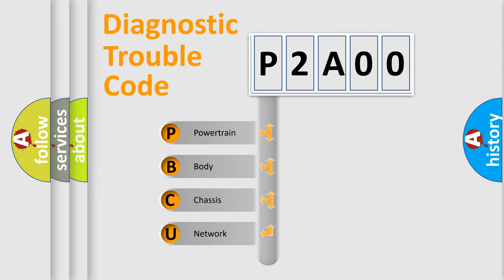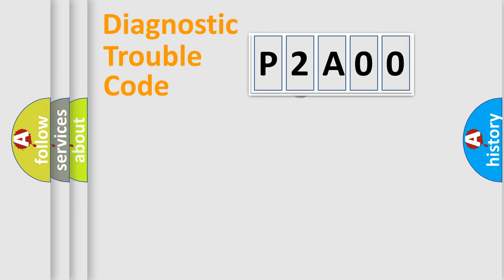We divide the electric system of automobile into four basic units: Powertrain, Body, Chassis, Network. This distribution is defined in the first character code.